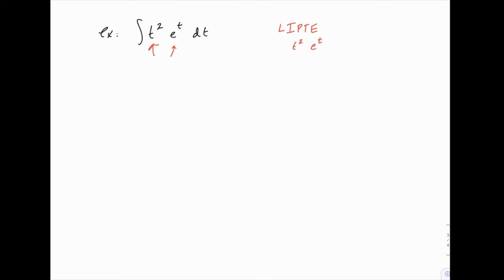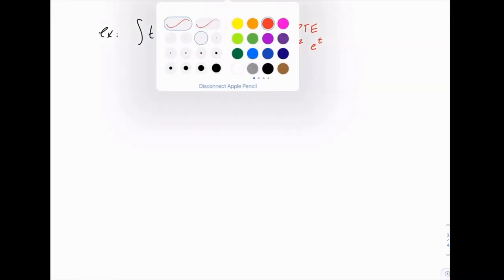And if you remember, the ones that come earlier in the list are the ones that we'll set up as u and the ones that come later in the list we'll set as dv.